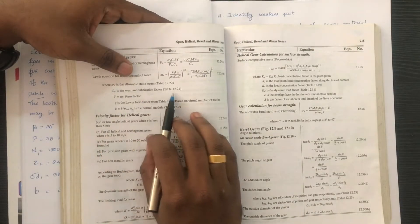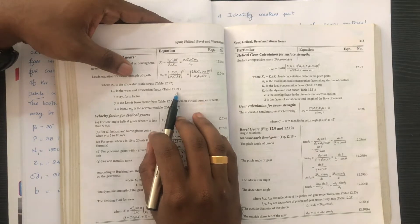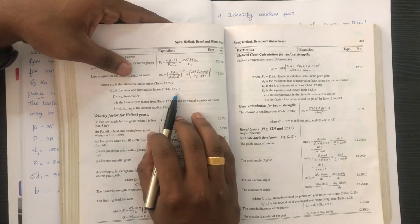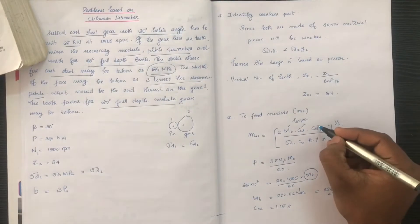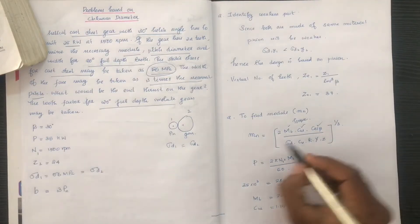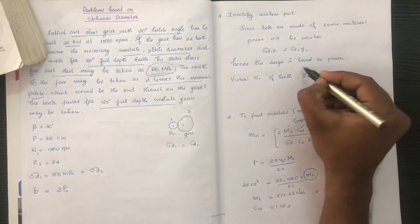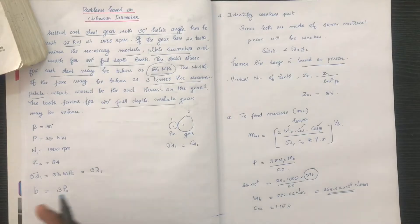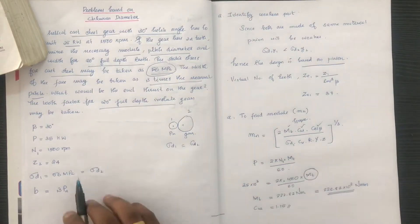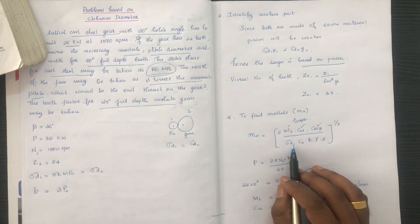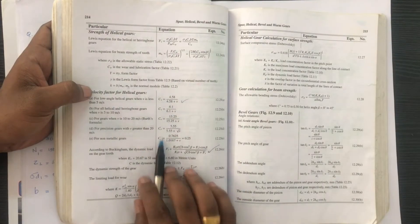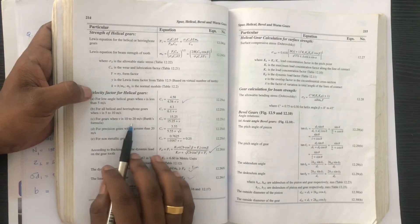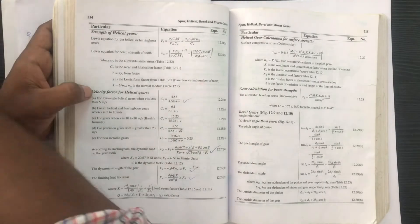Next, Cw is the wear lubrication factor, obtained from the data book table 12.21. The value of Cw is taken as 1.15.